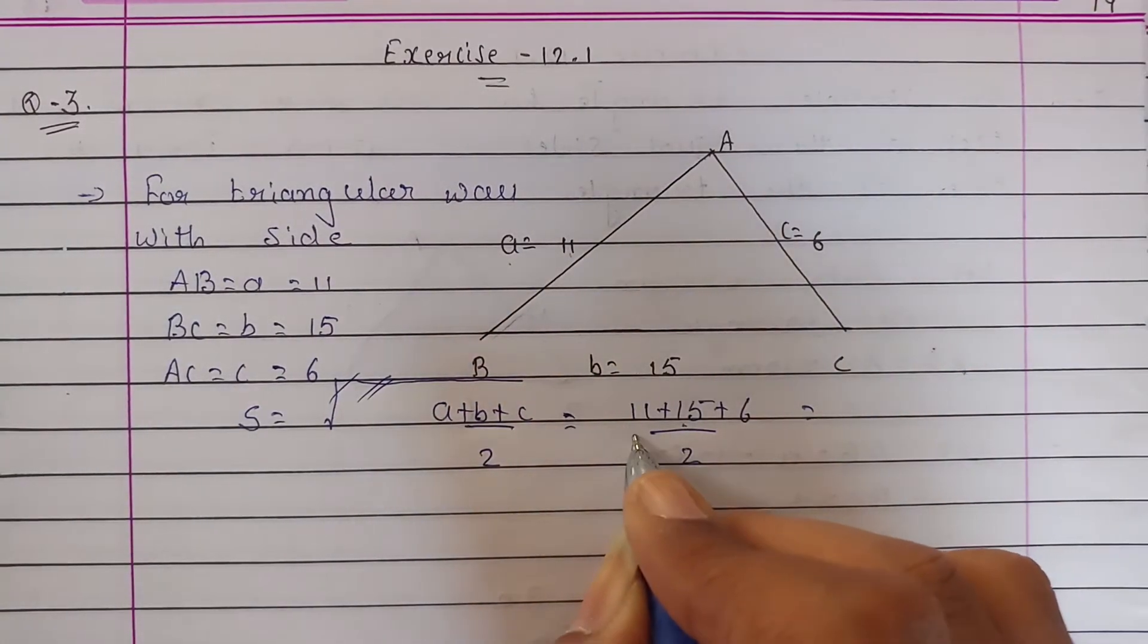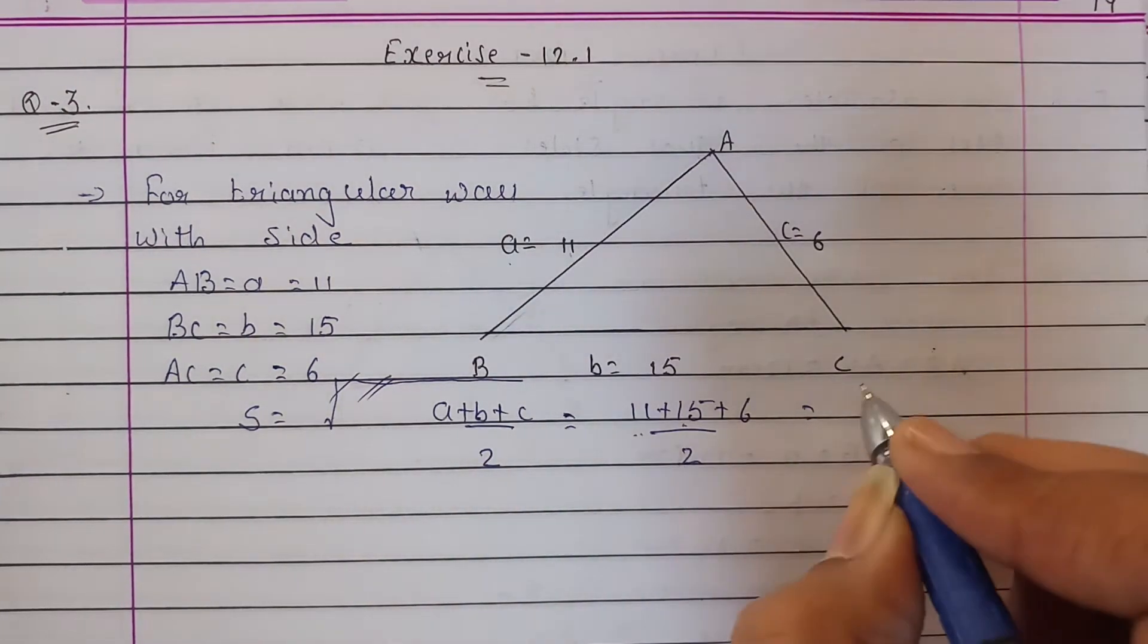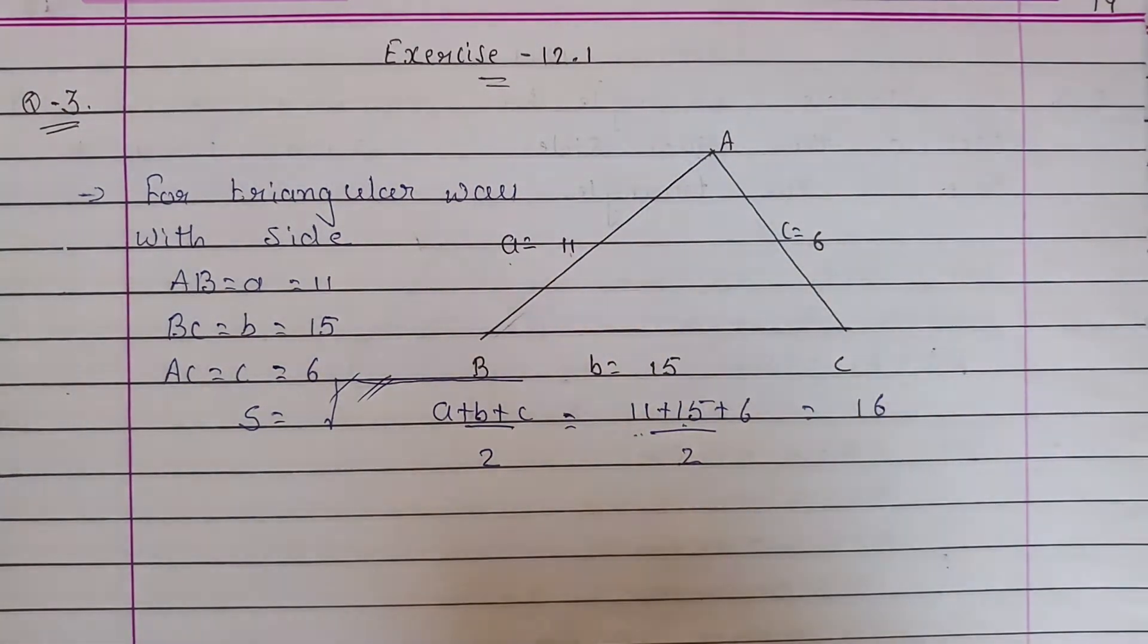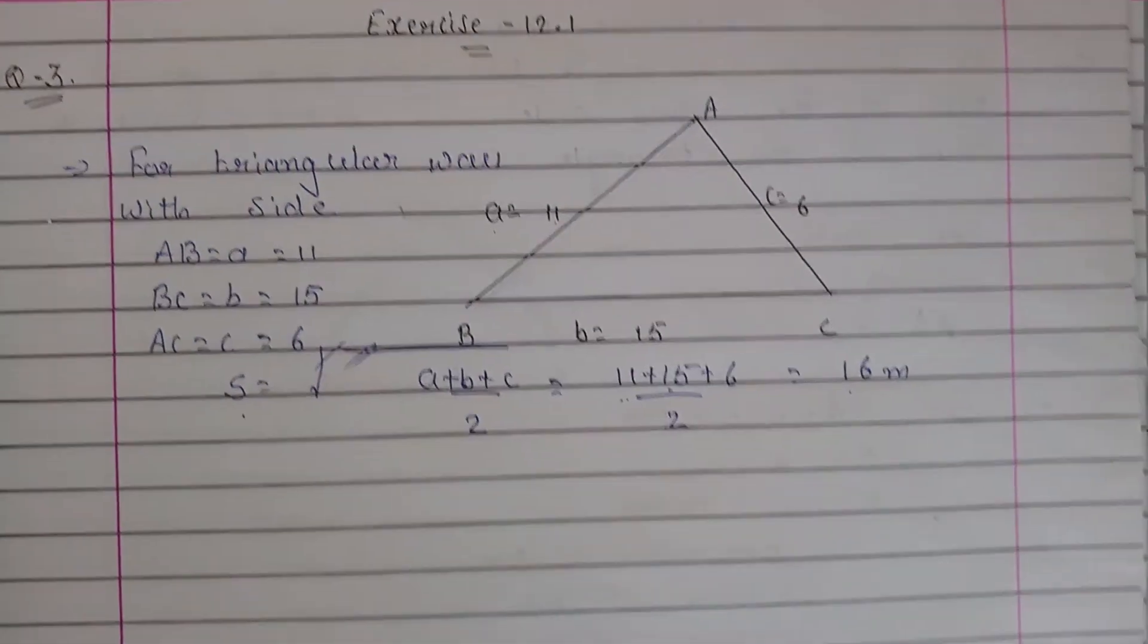15 + 11 = 26, 26 + 6 = 32, and 32 divided by 2 you will get 16. So our s is 16 meters.